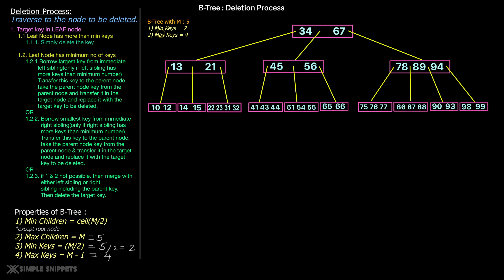The maximum number of keys in a particular node is m minus 1, which is 5 minus 1 equals 4. So for our B-tree, the minimum number of keys per node is 2 and the maximum is 4. Keep these values in mind because if we go below the minimum number of keys when deleting, we have to perform additional processing. When I say key or value, I mean the same thing — they refer to the numbers inside the nodes.